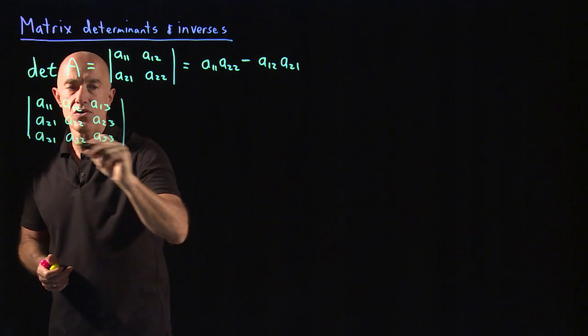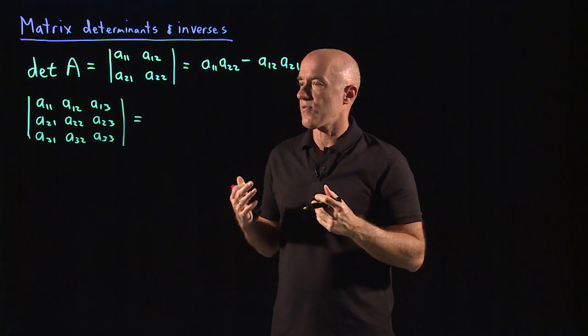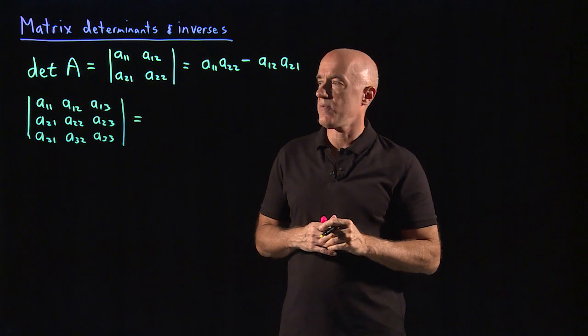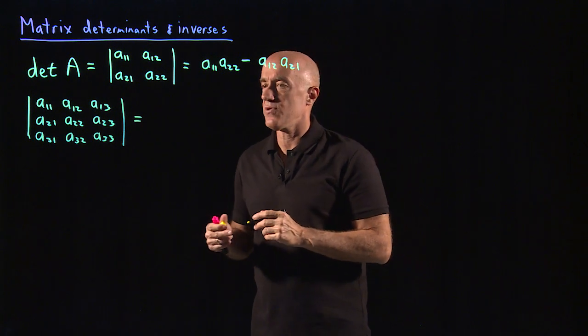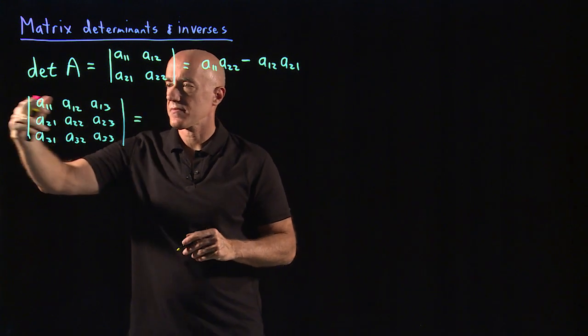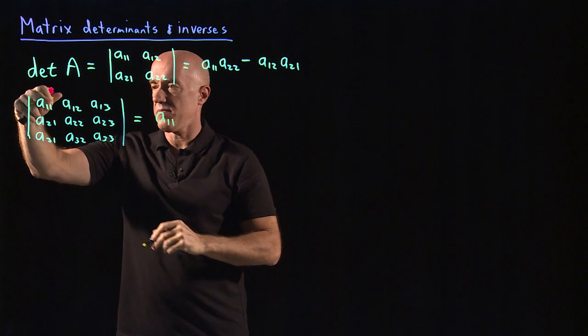And something called the Laplace expansion. We can write a three by three determinant in terms of two by two determinants. The way you do that is you go across the first row.